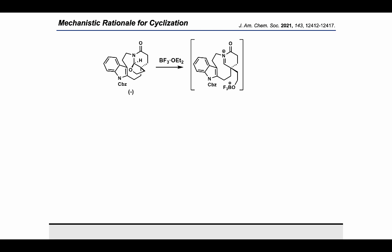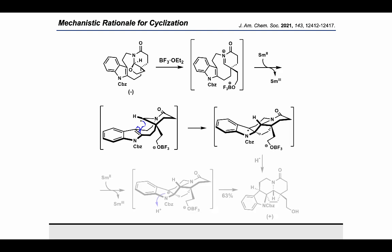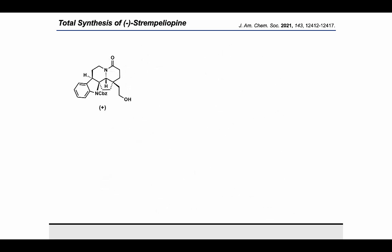The reaction outcome can be rationalized mechanistically as follows: BF₃ coordinates to oxygen for fragmentation of the anol acetal into the acyliminium, which is subsequently reduced by SmI₂ to generate the corresponding alpha-amino radical. This radical then engages at the C2 position of the indole to give a more stabilized benzylic radical, which can either be quenched via an H-dot source or, perhaps more likely, further reduced by another equivalent of SmI₂ to generate the benzylic anion. That anion is quenched by a proton source to give the more kinetically favorable cis-ring fusion product in 63% yield.